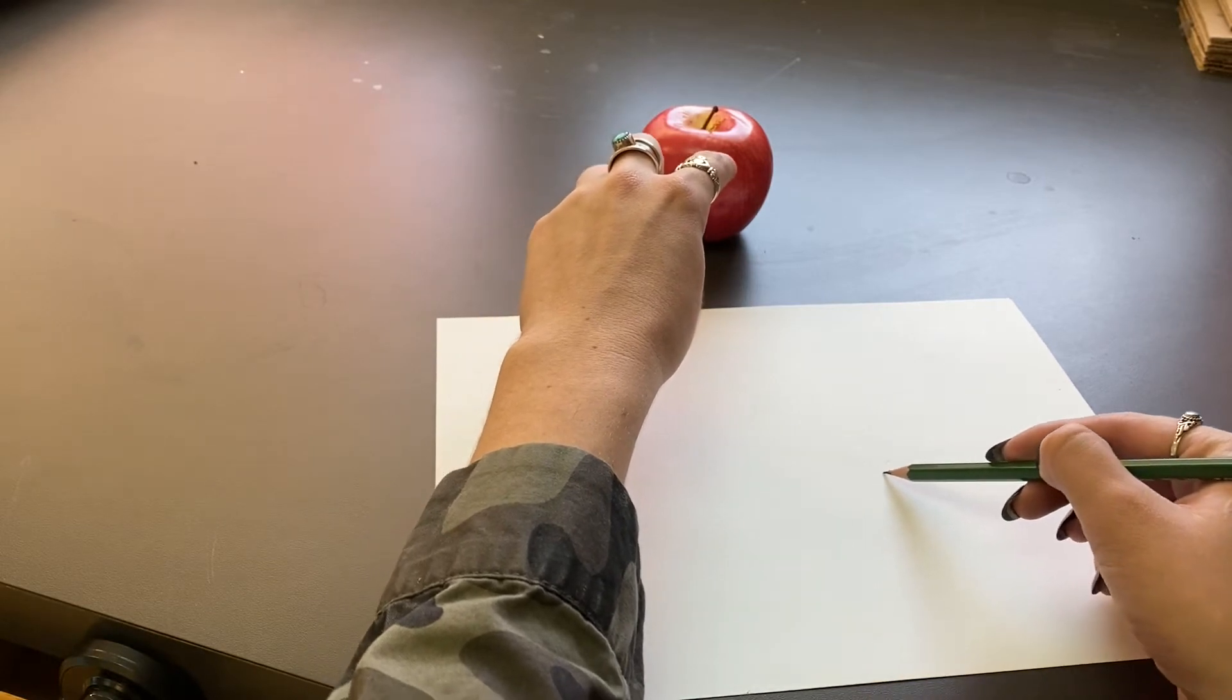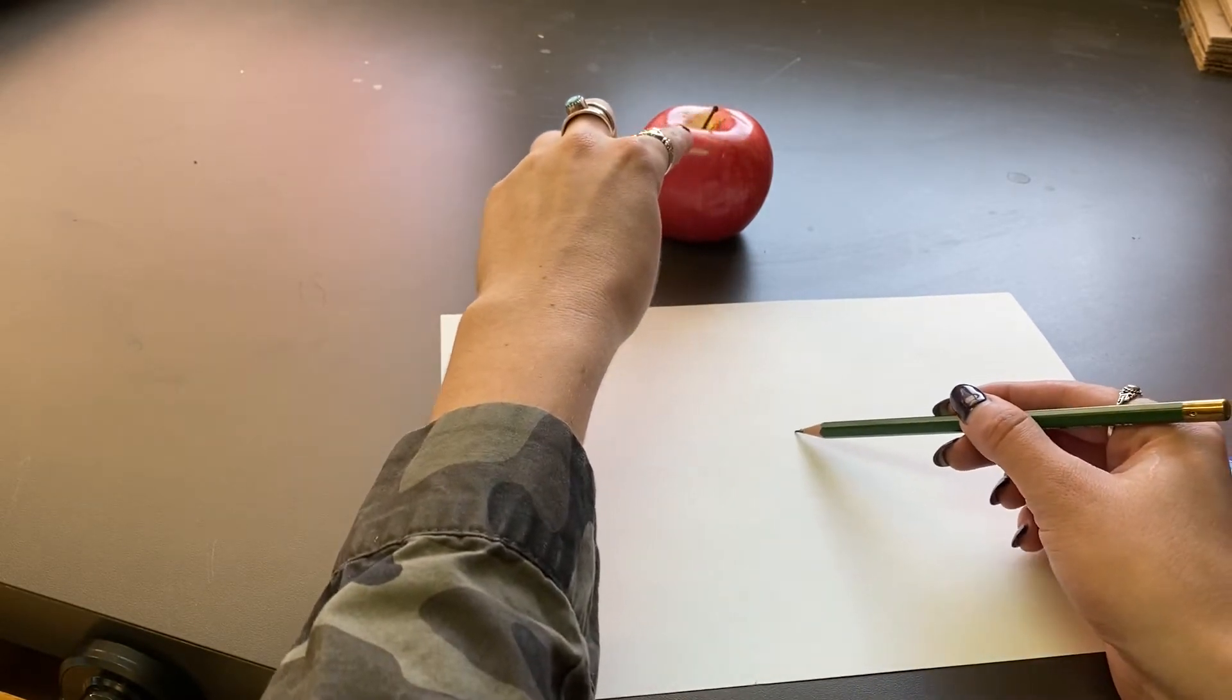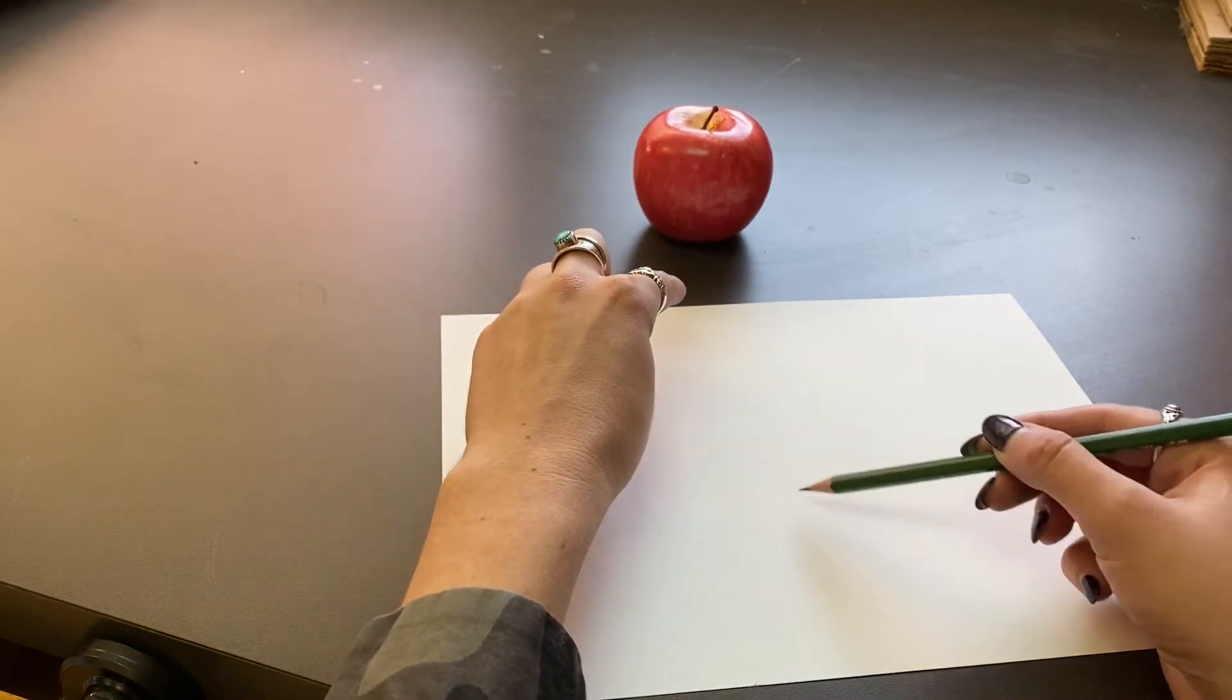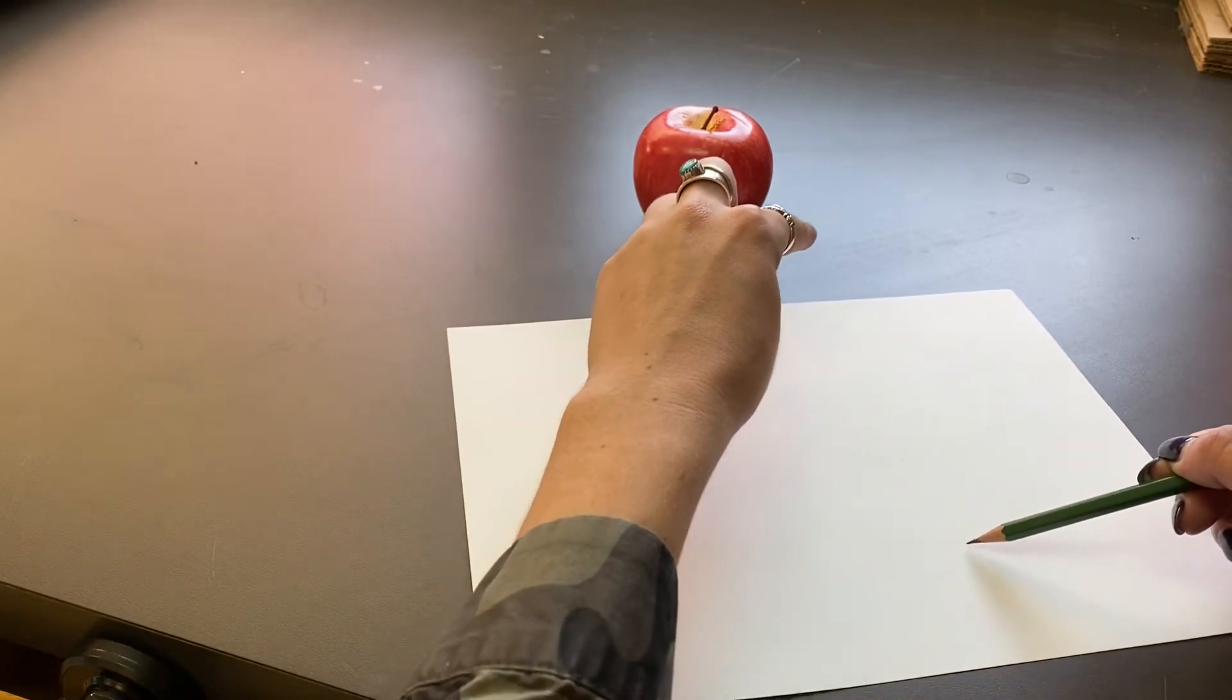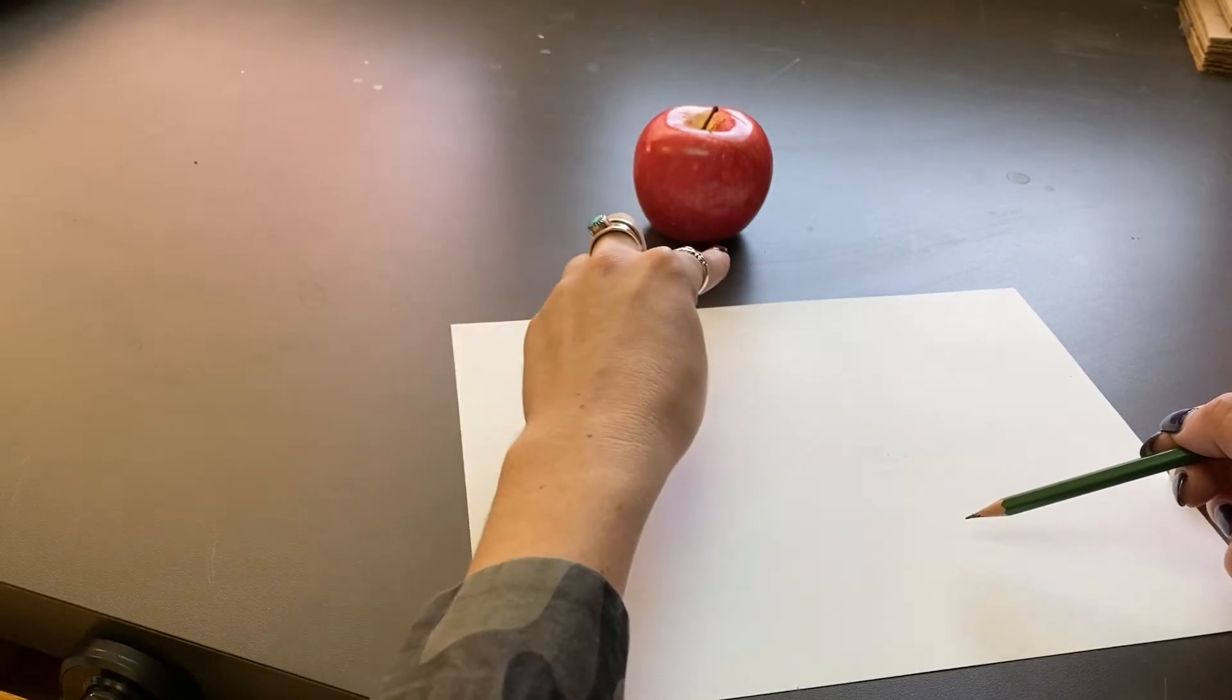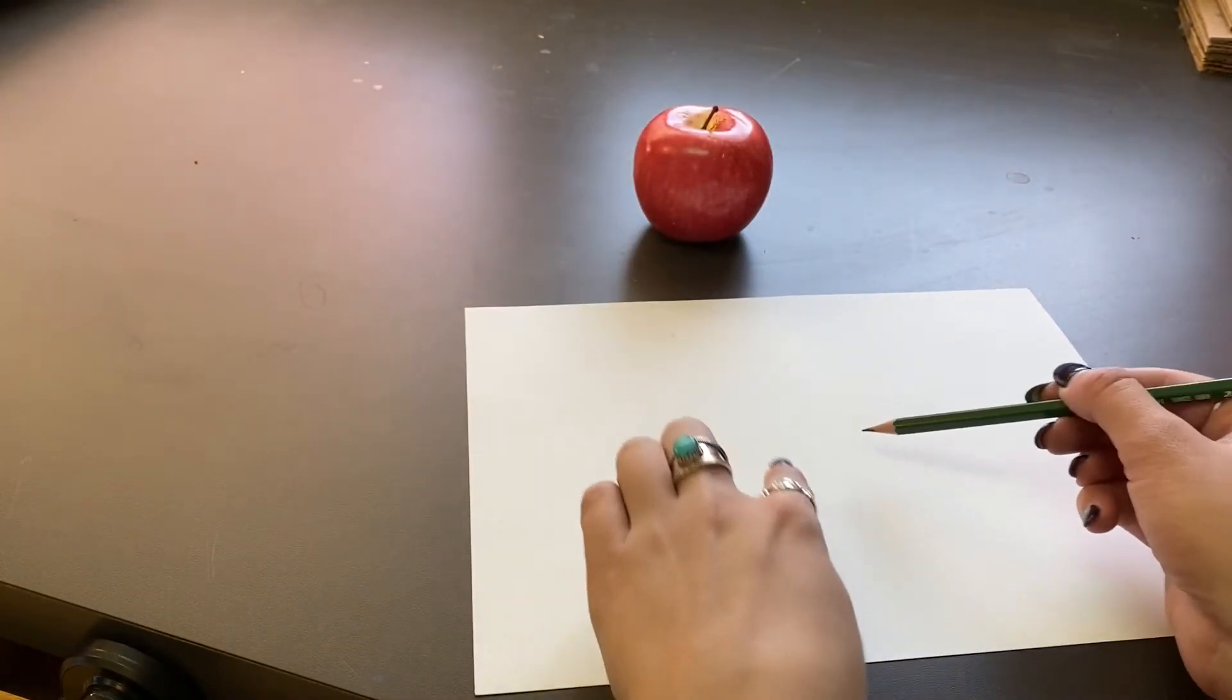So to begin I set up my still life and a still life is just a group or an object that sits really still. If you're using more than one you can move around your objects to create a cool looking composition. I'm just going to focus on this one apple.